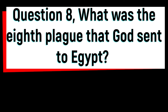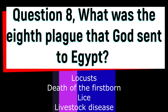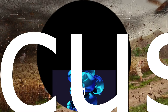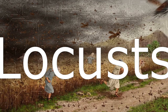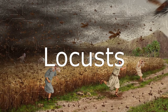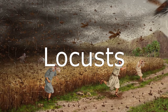Question 8: what was the eighth plague that God sent to Egypt? Was it locusts, death of the firstborn, livestock, or livestock disease? The answer is locusts. God sent a huge swarm of locusts that ate up all the plants that were left after the hailstorm. The locusts covered the sky and made it dark.